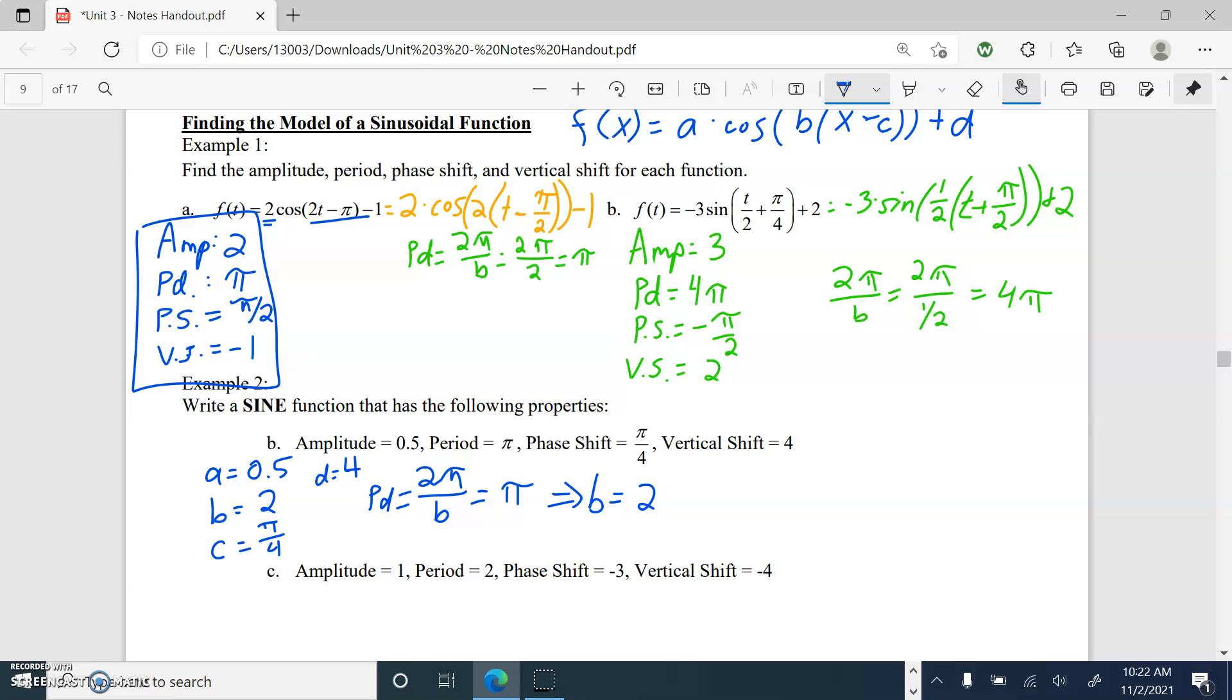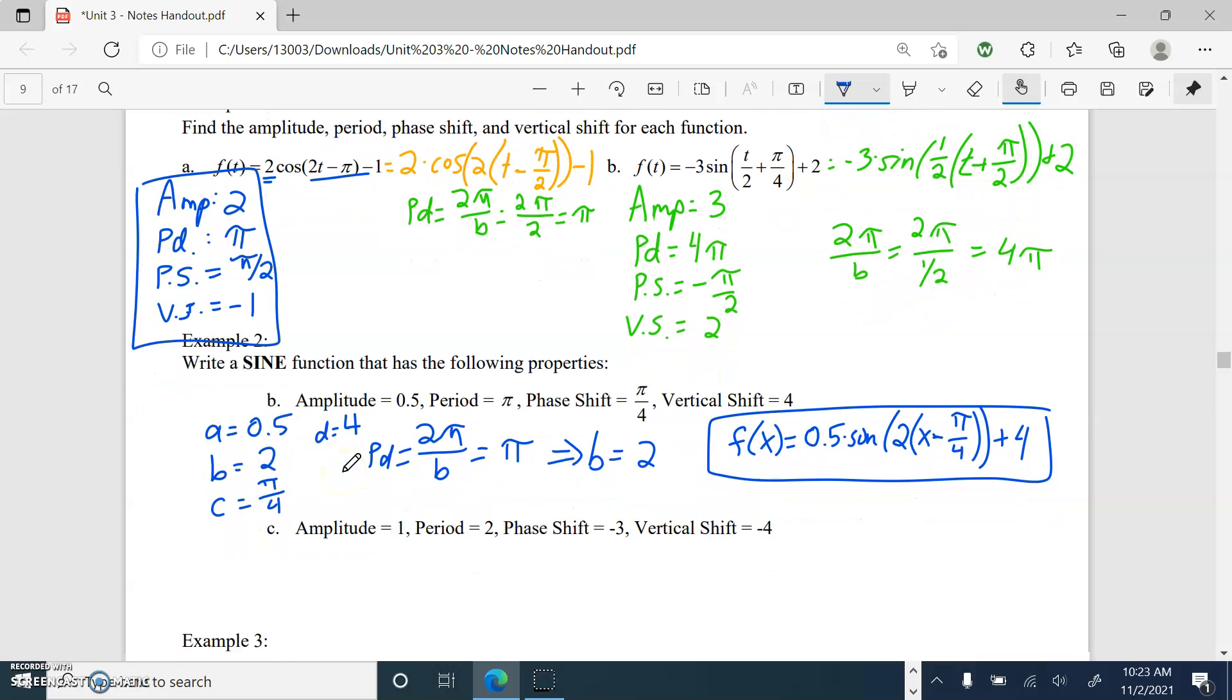So over here, I'm going to write that out. So I could say f of x equals, oh, by the way, we are being told to write a sine function, so we do need to make sure that we note that. So a times sine, so 0.5 times sine. B times x minus c. B was 2. So 2 times x minus c. C was a positive π over 4. x minus π over 4. D, vertical shift 4 plus 4. See? It is really, truly that simple. Step 1, get your a, b, c, and d. Step 2, plug those into your equation.